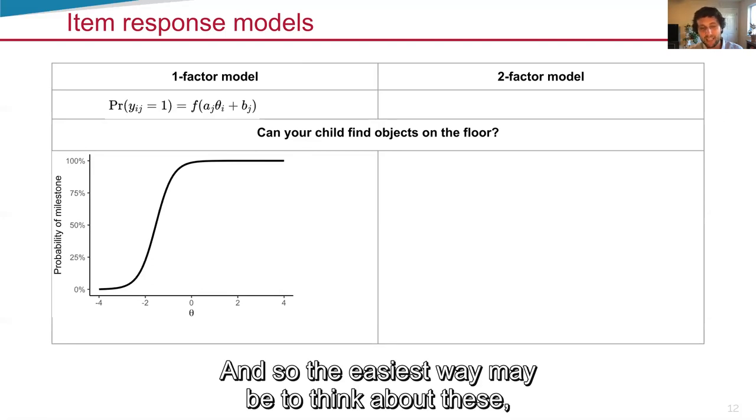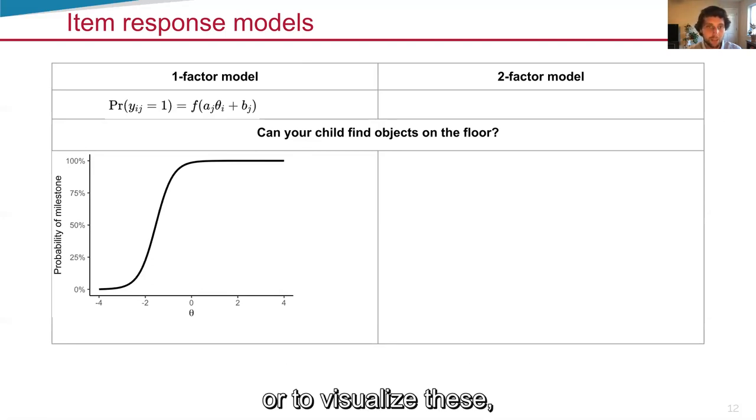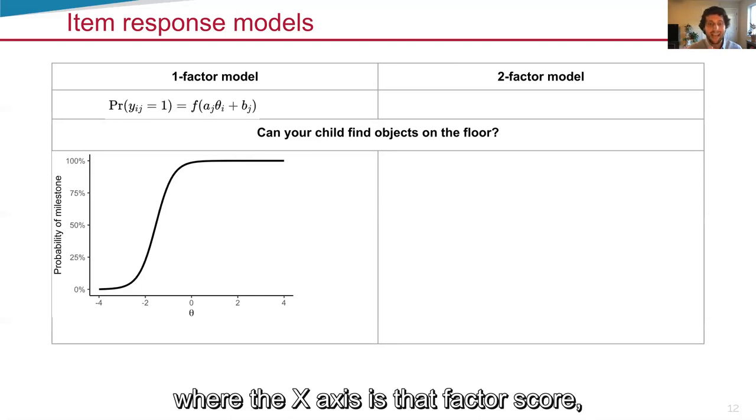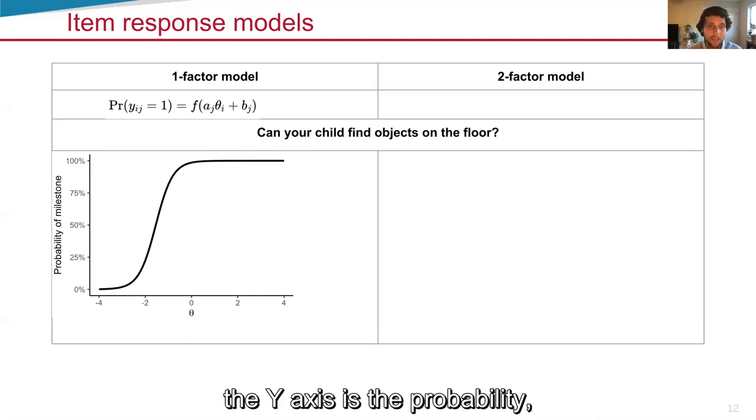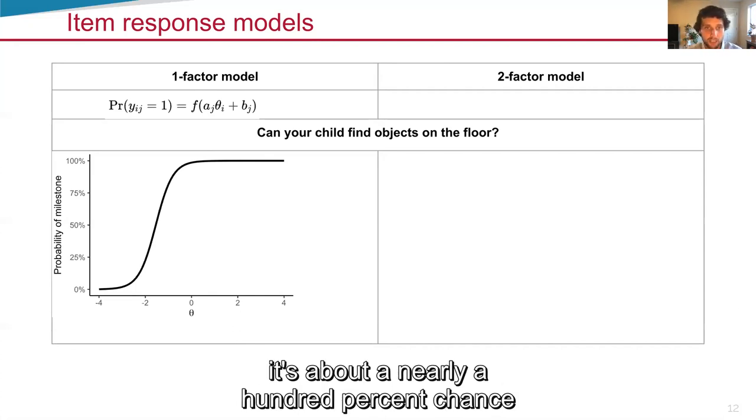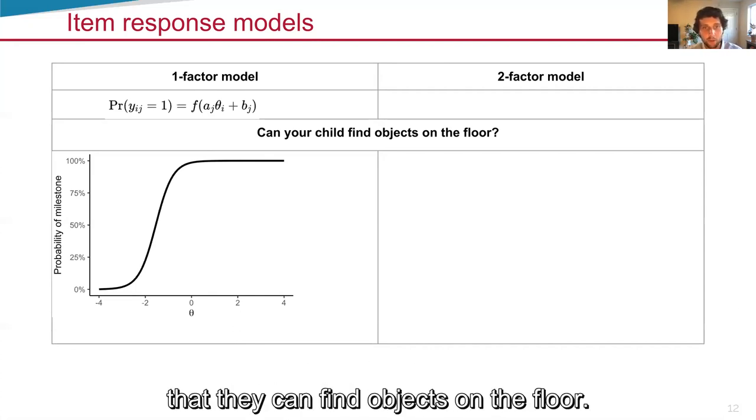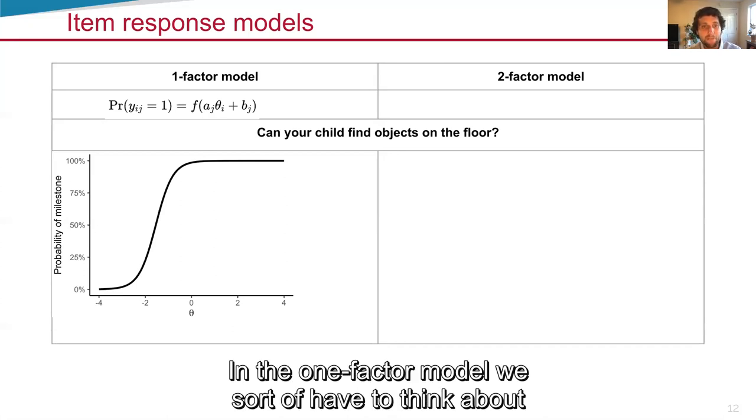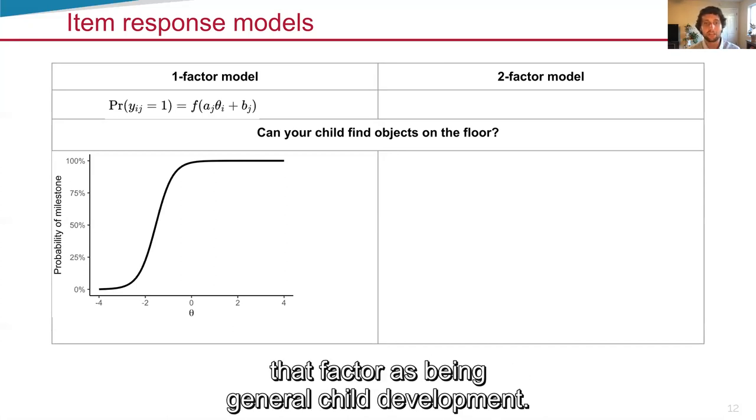The easiest way maybe to think about these or to visualize these is to look at a graph like we've shown, where the x-axis is that factor score, the y-axis is the probability. You can see that for this one, as soon as a child has a factor score of theta equals zero, it's about a nearly 100% chance that they can find objects on the floor. In the one-factor model, we sort of have to think about that factor as being general child development.